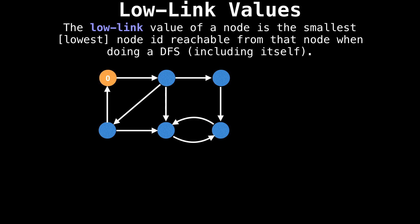Suppose we start at the top left corner and label that node with an ID of zero. Now we continue exploring the graph until we visit all the edges and have labeled all the nodes. Now that we're done labeling the nodes, inspect the graph and try to determine the low link value of each node. Again, the low link value of a node is the smallest node ID reachable from that node, including itself.